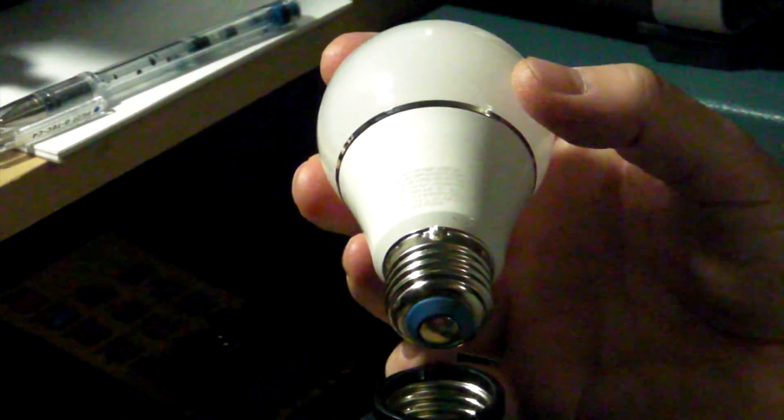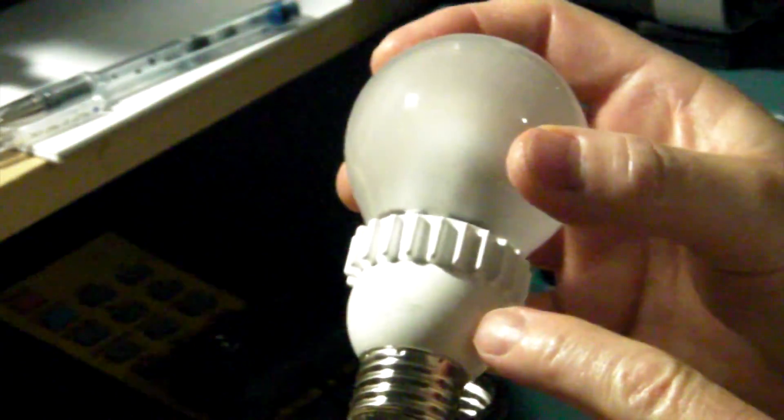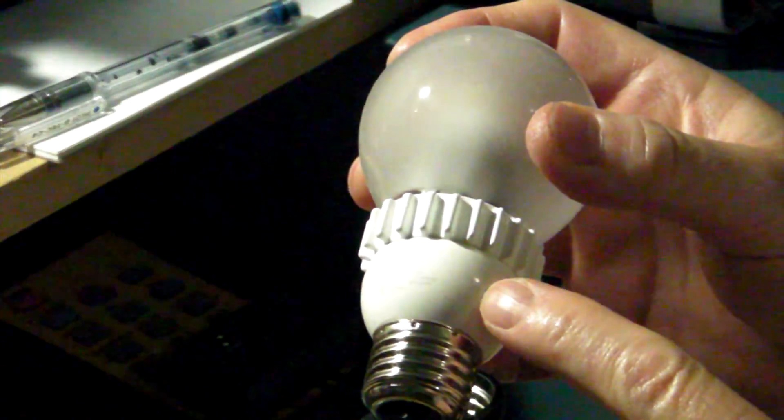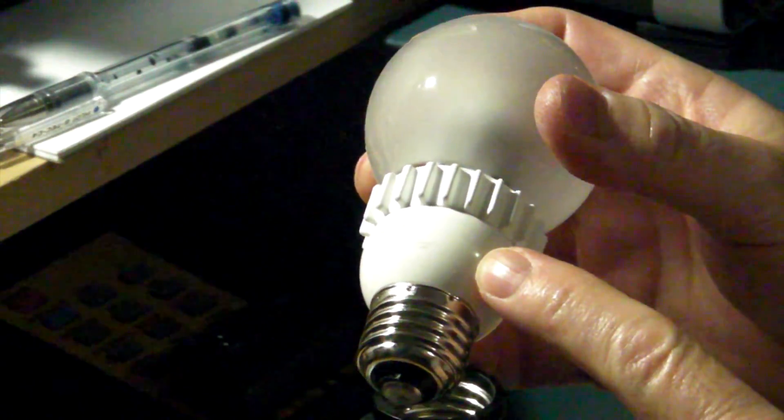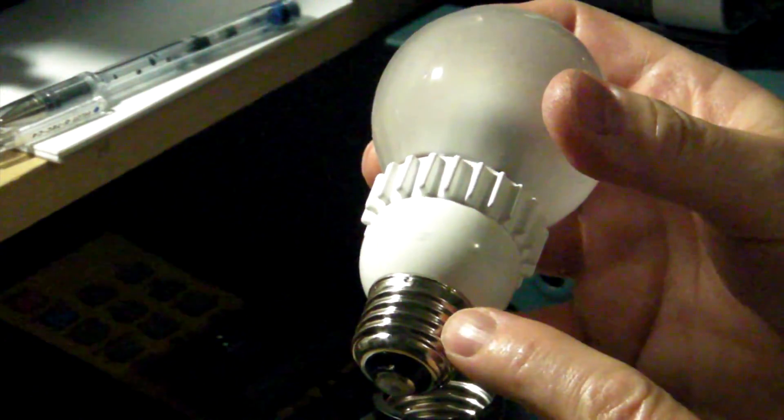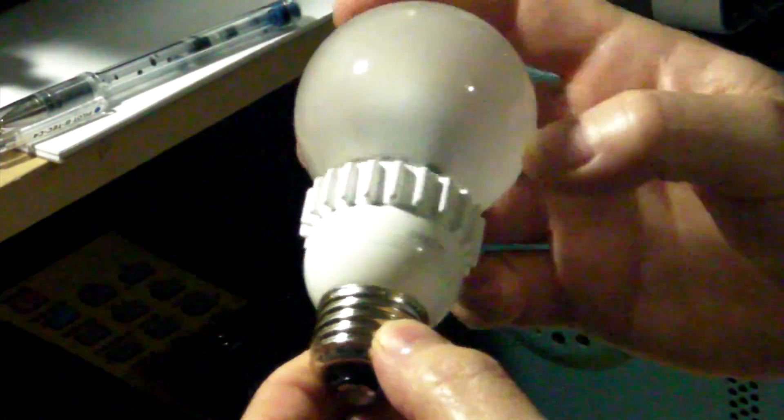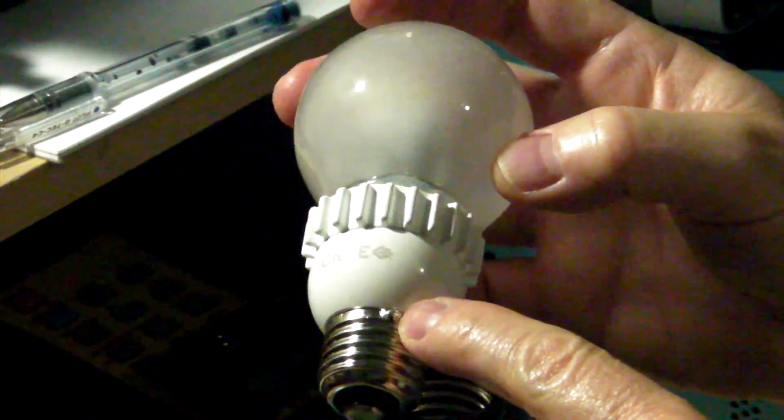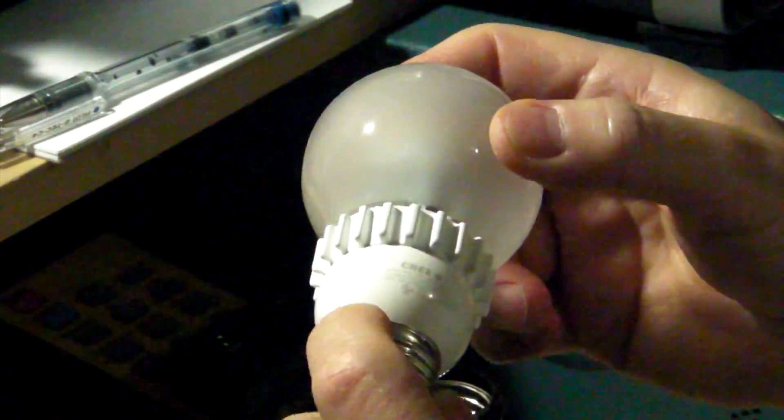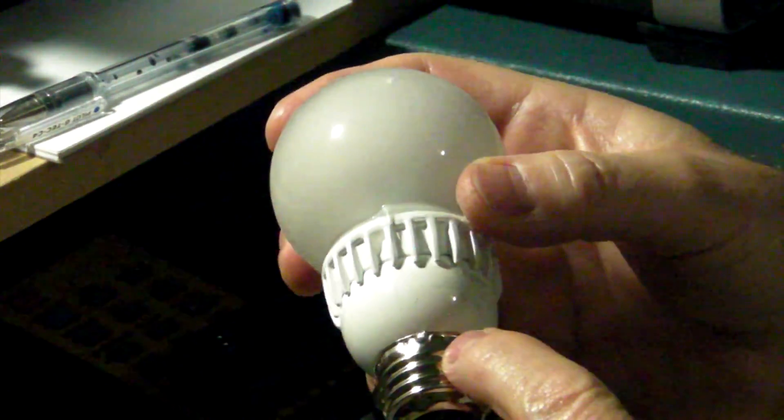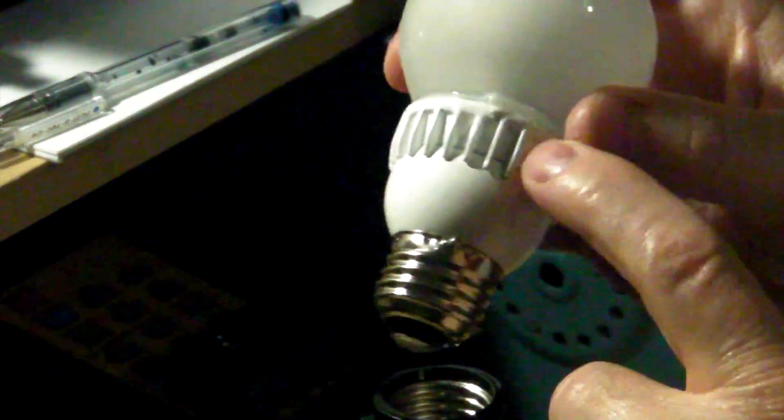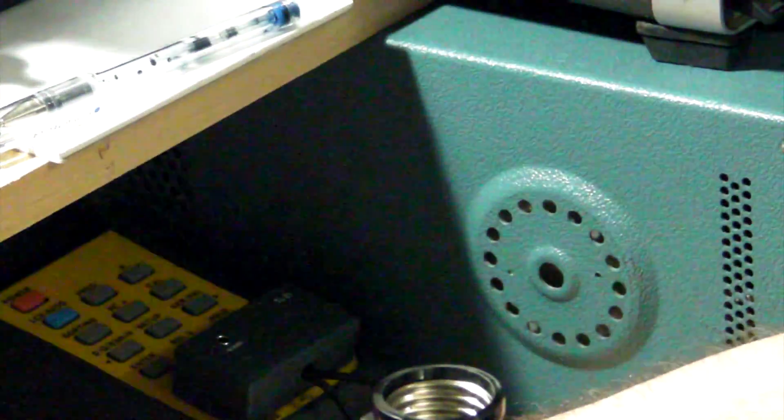After a while, this plastic, when it would get hot, would relax. It wouldn't hold the pressure against the metal shell any longer. And the crimp connection—and you can see I soldered this one—the crimp connection would fail. This one here, I've also soldered. I repaired a lot of these bulbs because I had a lot of them.